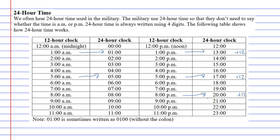Now I want to talk about midnight and noon because this is where a bit of confusion happens. 12 noon, which is the middle of the day, is 1200 hours — written the same as it looks in 12-hour time. And 12 midnight is actually zero hundred hours.